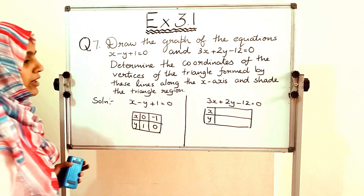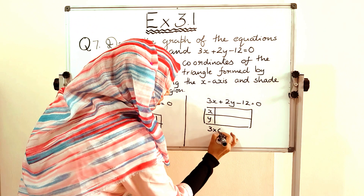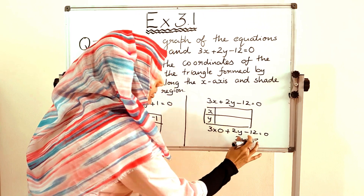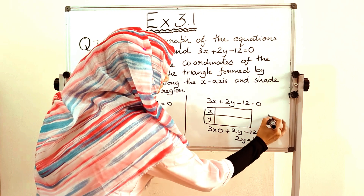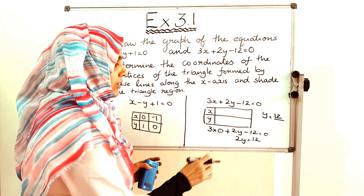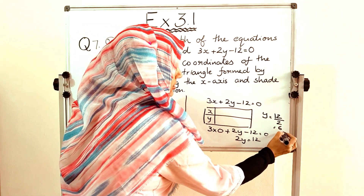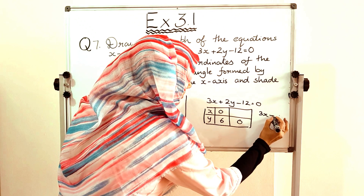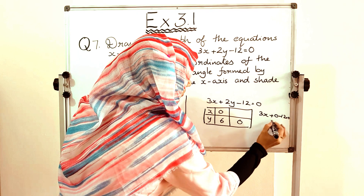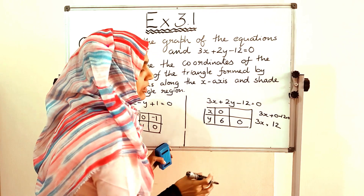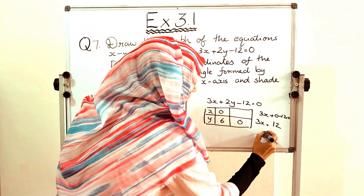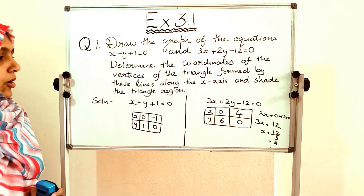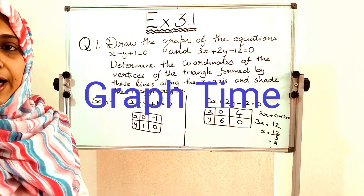From these points, let us draw the graph and find the solutions. For equation 1, points are (0, 1) and (−1, 0). For equation 2, points are (0, 6) and (4, 0). Join each pair of points and extend the lines.